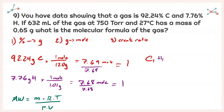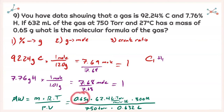Plugging in values with a few changes: temperature must be in Kelvin, so 27 degrees Celsius becomes 300 Kelvin, and the R value corresponds to Torr. Also, 632 milliliters must be converted to liters since R uses liters. Plugging all of that into my calculator, I get 25.7 grams per mole as my molar mass.